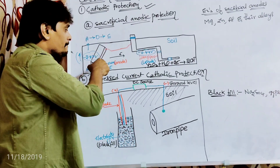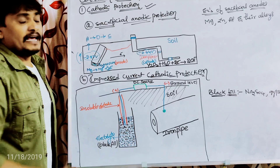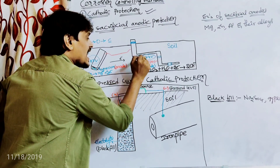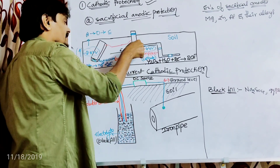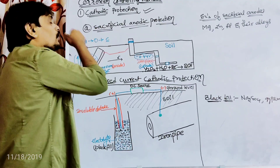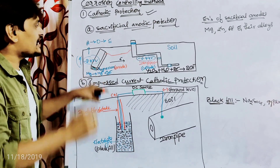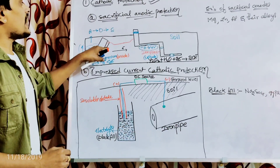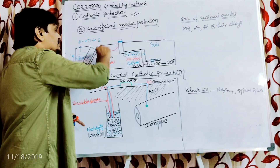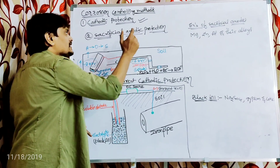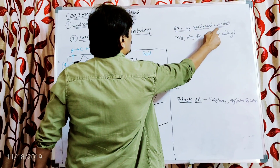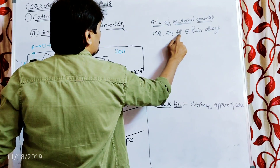Without magnesium, the iron would act as the anode and undergo oxidation, which is corrosion. But when iron is connected to magnesium, the magnesium — having a more negative value — acts as the anode and undergoes oxidation instead. The magnesium is sacrificing itself on behalf of the iron. Since it sacrifices itself, the magnesium is called the 'sacrificial anode,' and this method is called sacrificial anodic protection.